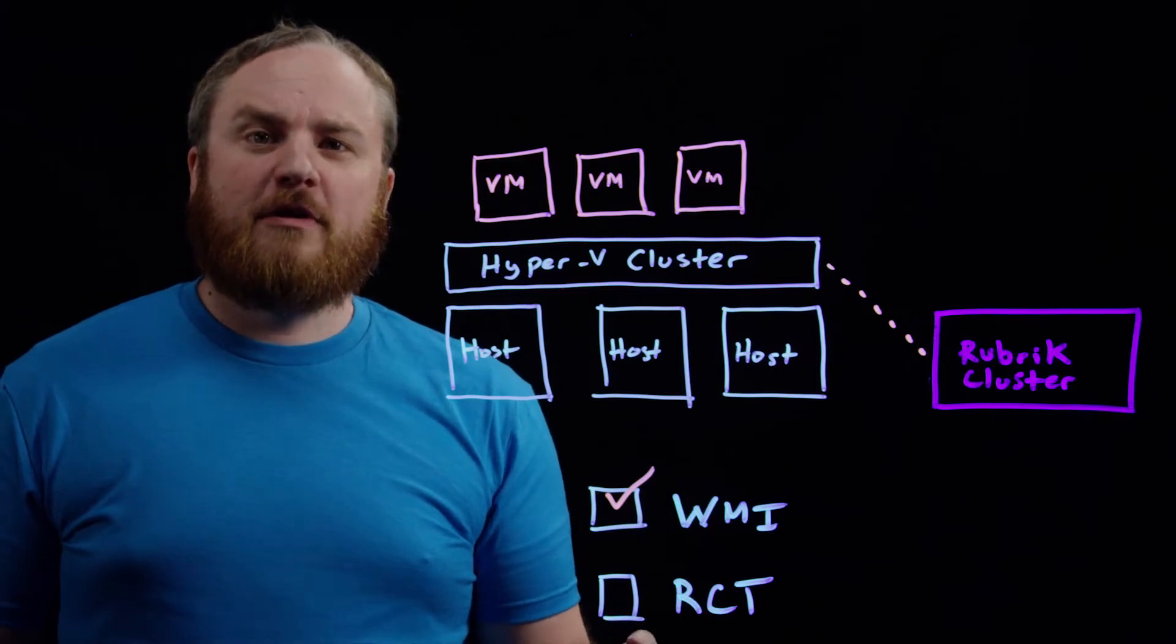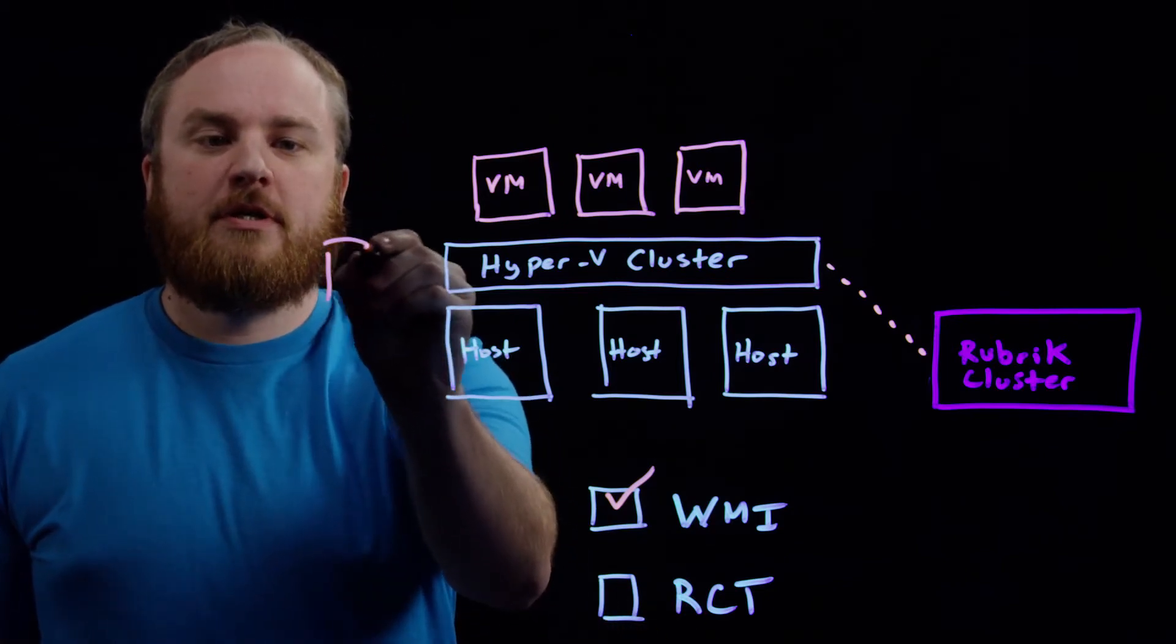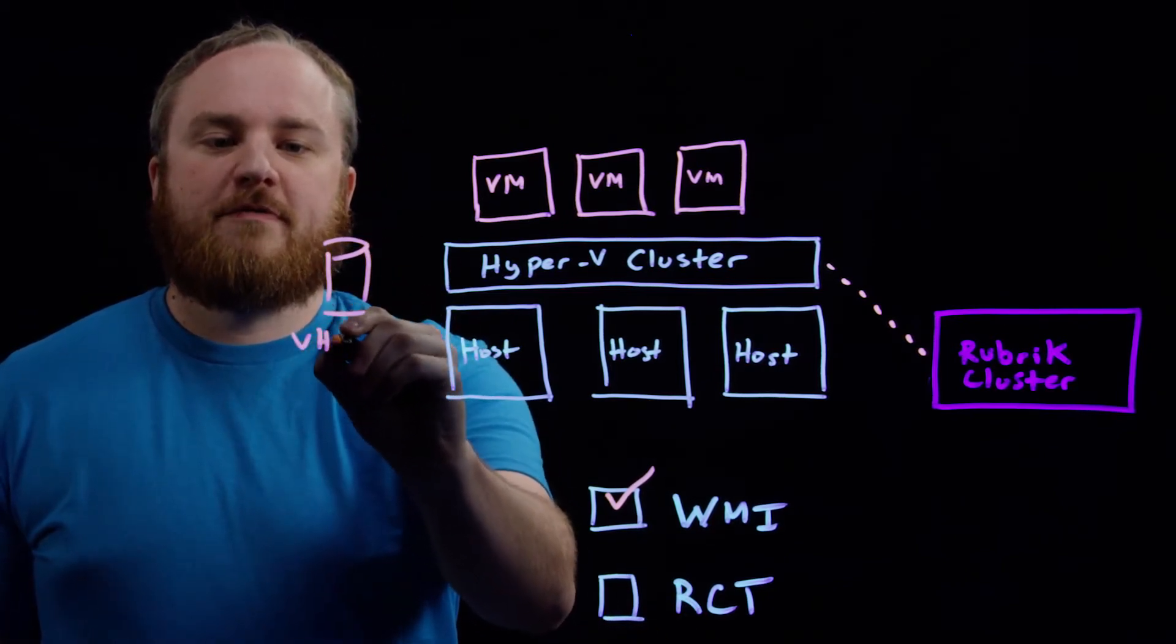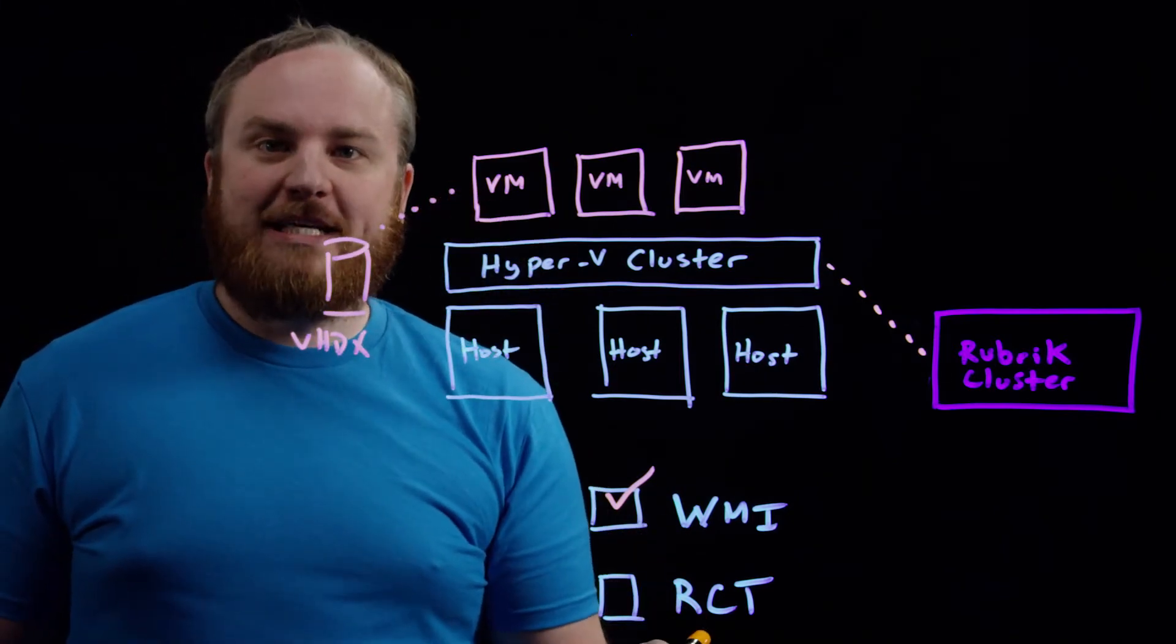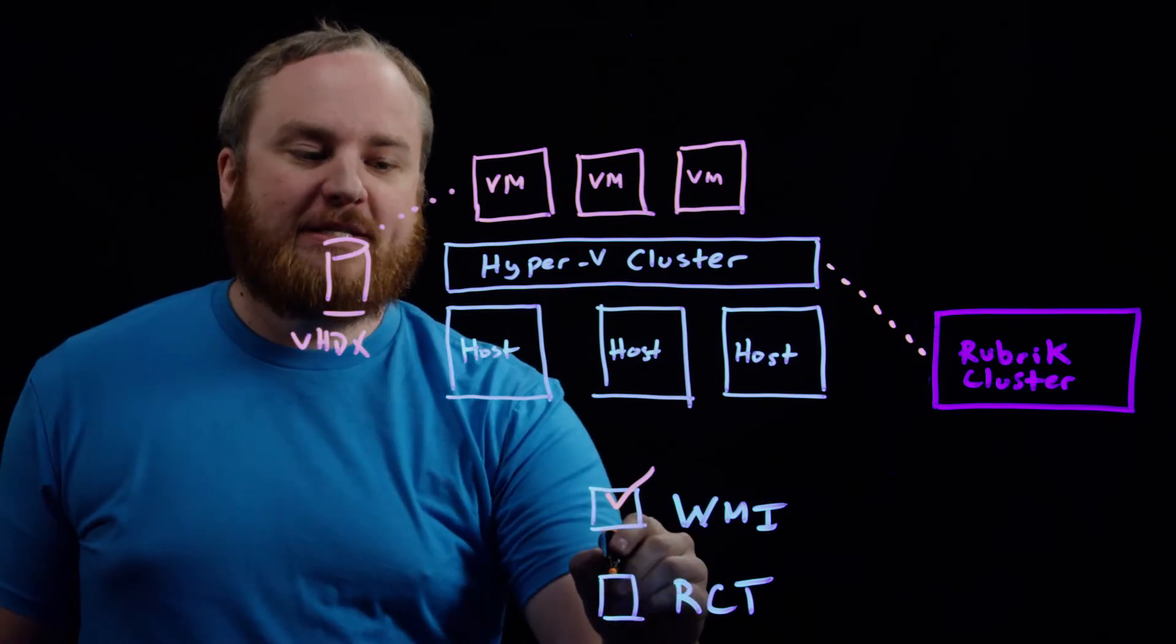We also do first, full, and forever incrementals of your VHDX information. So as those hang off of each virtual machine in the environment, we're actually grabbing that using Resilient Change Tracking, or RCT, to make sure that we only grab the change bits out of the environment.